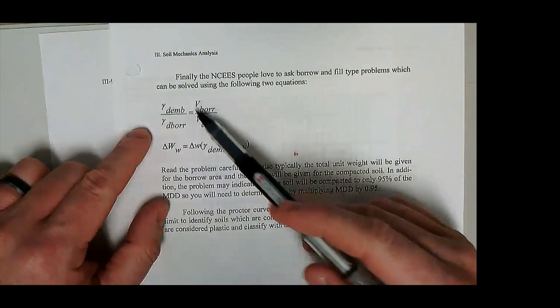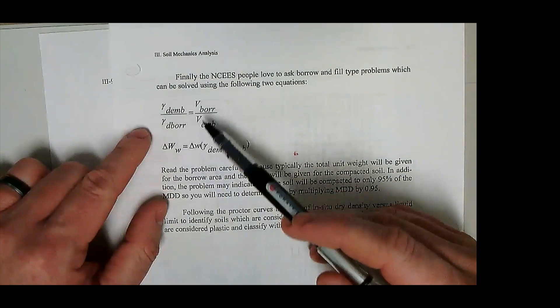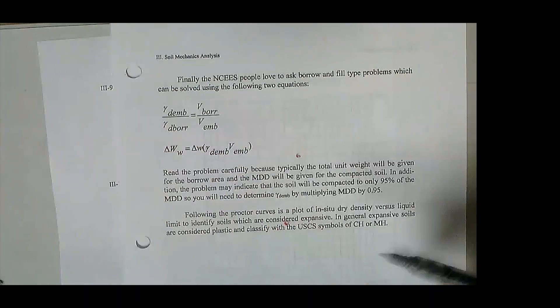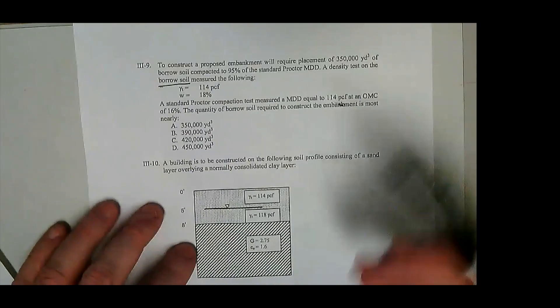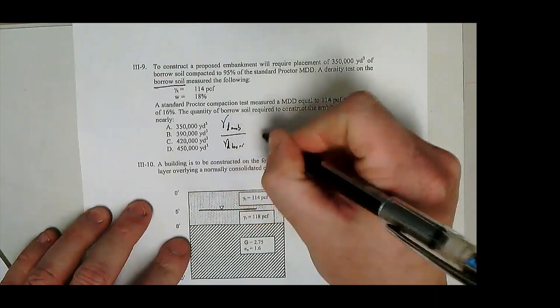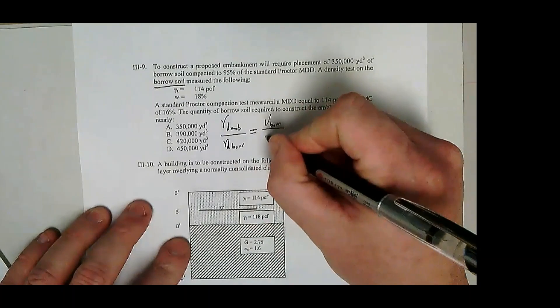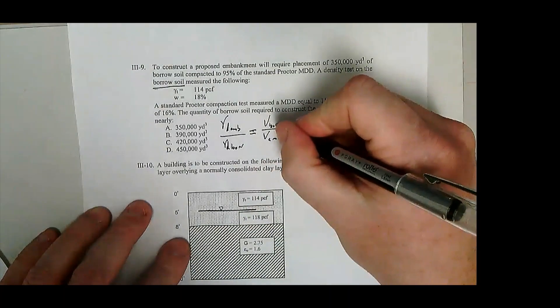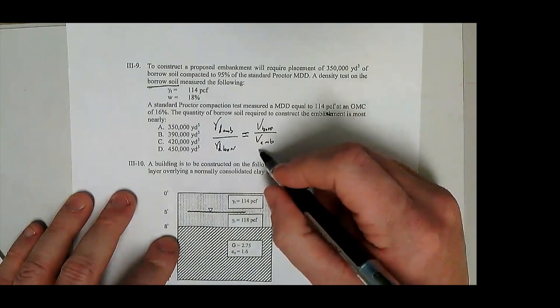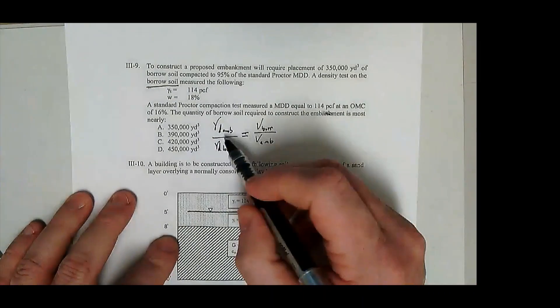So we measured both these. Well we calculated this value but we measured this one or at least we measured the total unit weight, the moisture content. We can calculate gamma d from those values. So again v borrow, this is the volume of the soil you need to borrow to build the embankment. Volume embankment, this is the volume of the embankment once it's constructed. So this value was given, v borrow is really what we're trying to find, right? So let's just walk through this again. We'll write this equation out from page 3-19. So gamma d embankment divided by gamma d borrow is equal to v borrow divided by v embankment. So 350,000 cubic yards, that is the volume of the embankment, right? That was given. Volume borrow, quantity of borrow soil required, that's what we're trying to figure out. That's some number larger than 350,000. So presumably, it probably will be.